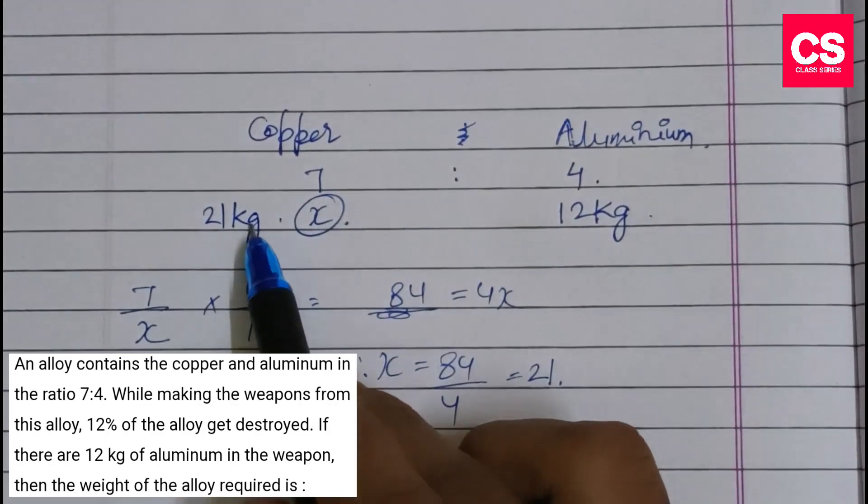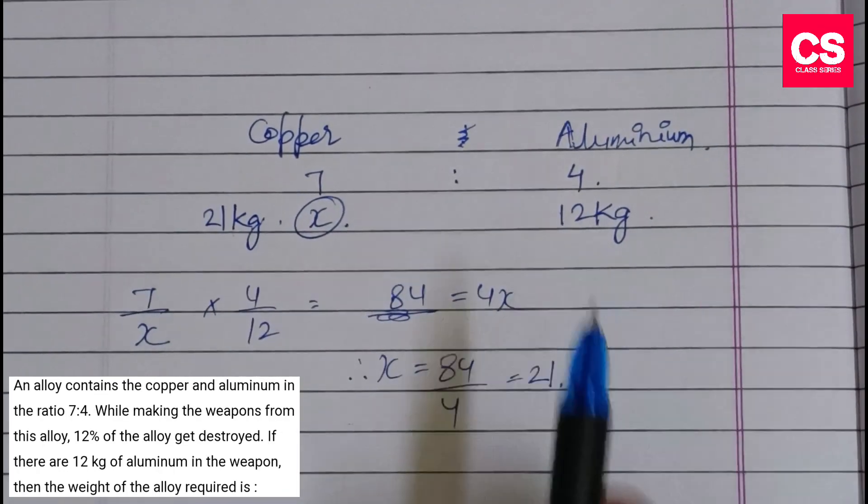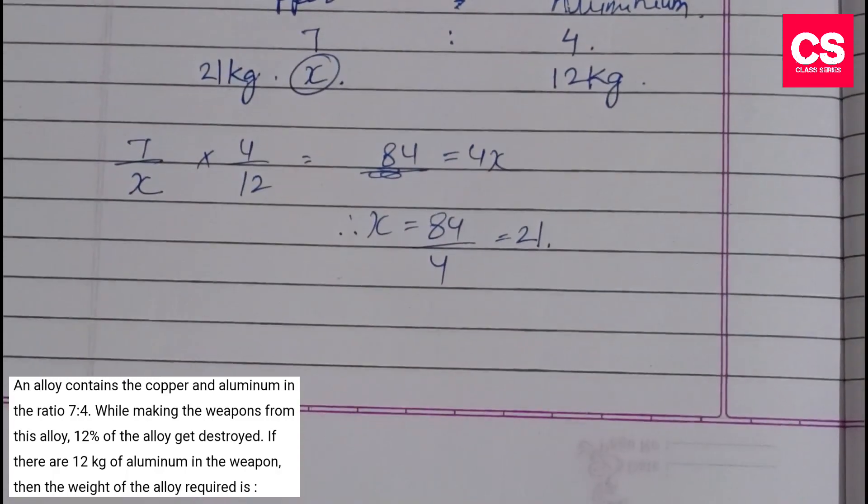So we have 21 kg of copper and 12 kg of aluminum. The question asks us to find the total weight of the alloy required.